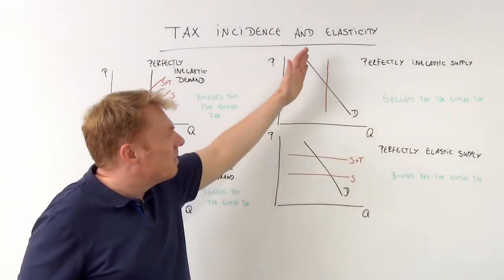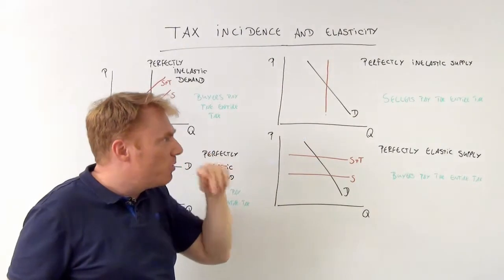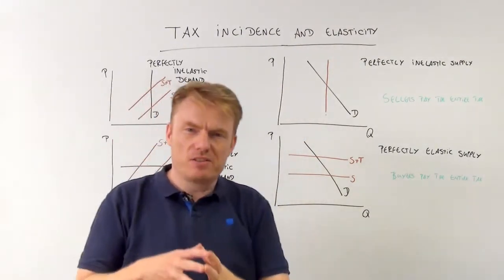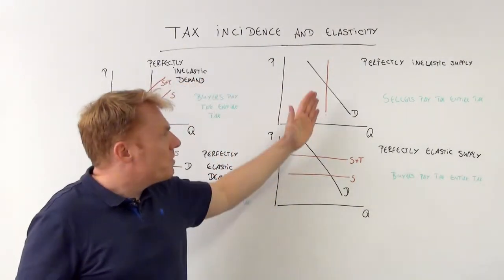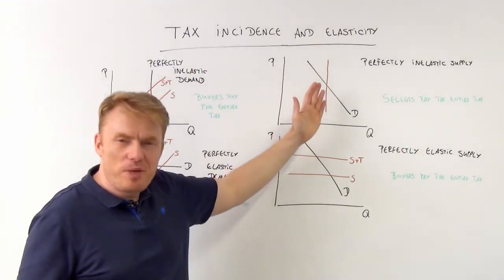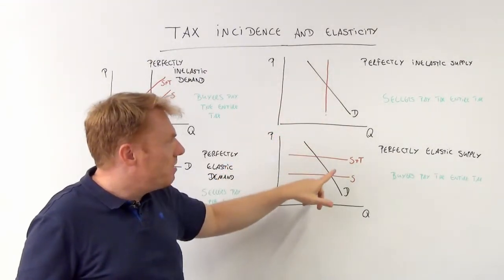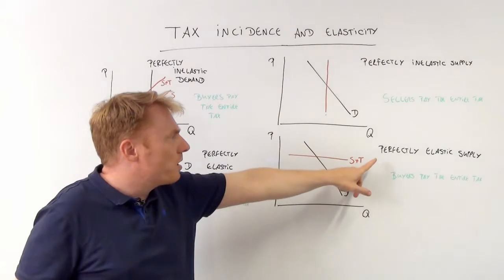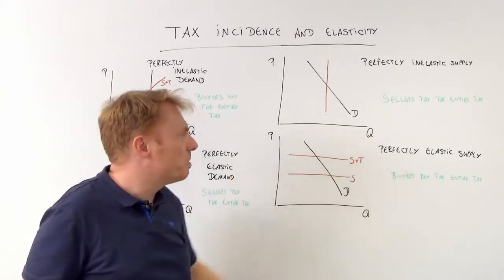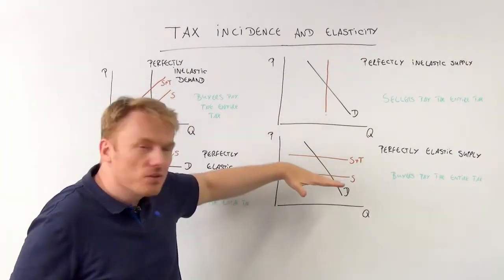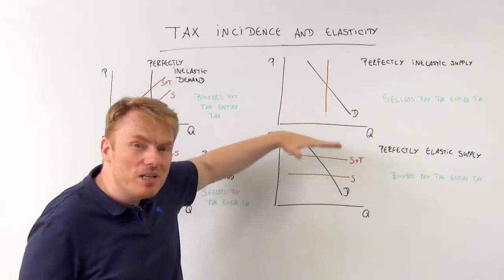If it is inelastic, it goes this way. So if there is a tax, sellers pay the entire tax. And if there is a tax with regards to a perfectly elastic supply curve, it goes to the left, which means it goes up.